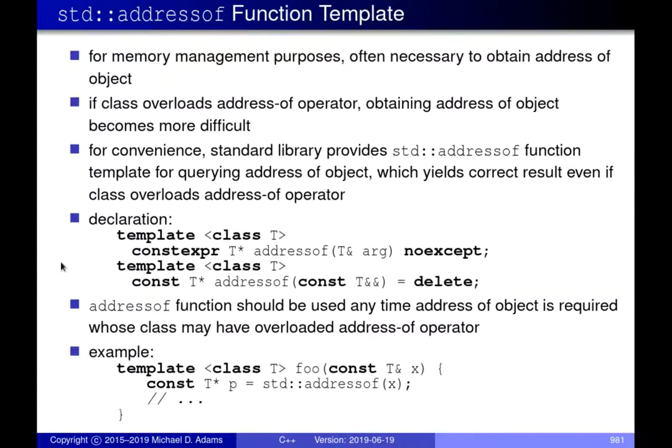In the last lecture, we finished talking about how to separate allocation from construction, essentially by using placement new and operator new, and how to separate destruction from deallocation, essentially by directly invoking destructors and then using operator delete. What we're going to be doing is building on this and working up to some actual practical code examples where we use some of the techniques that we've been talking about.